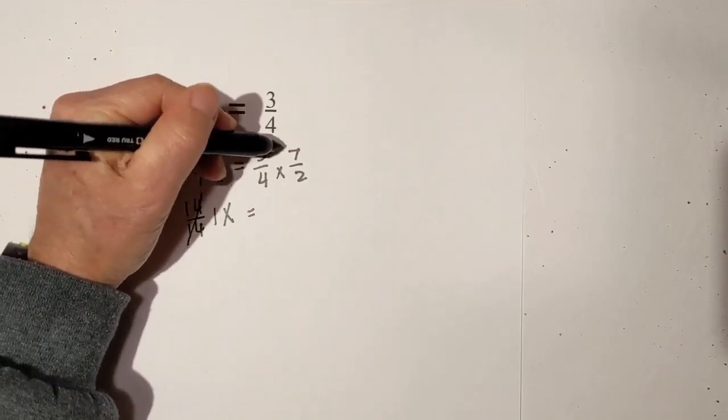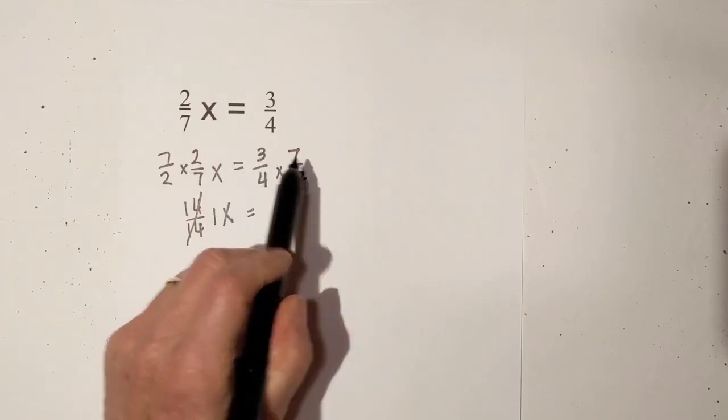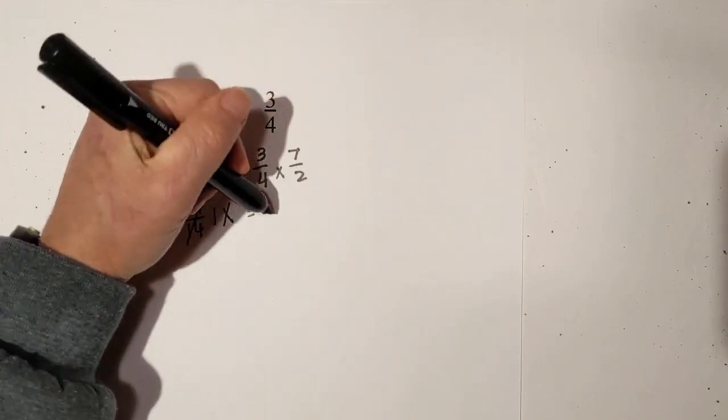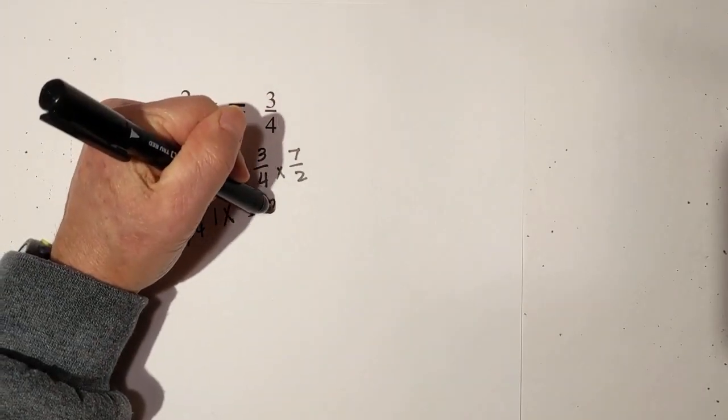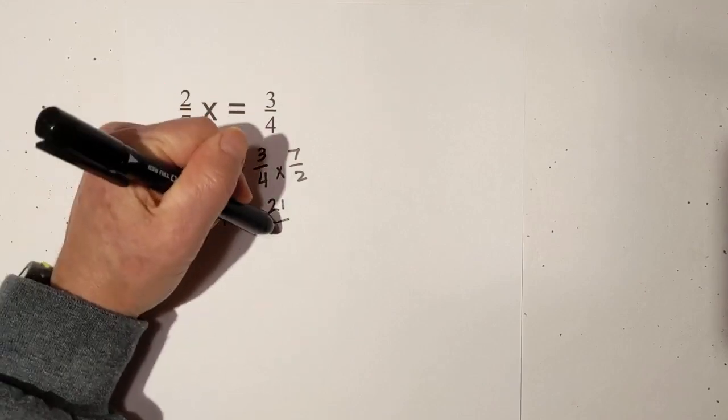Let's do this. 3 times 7. In multiplication, you just multiply straight across. 3 times 7 is 21 over 8.